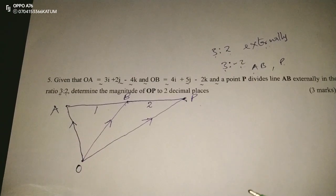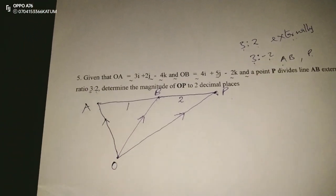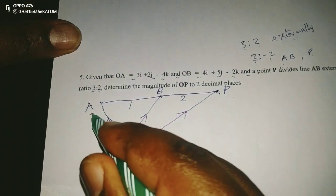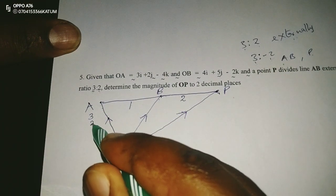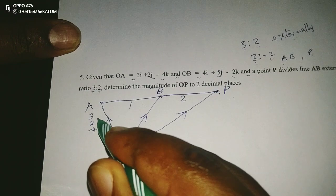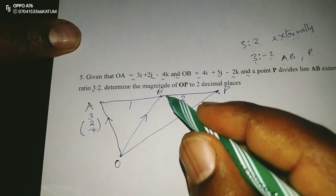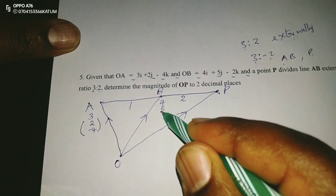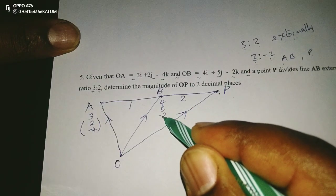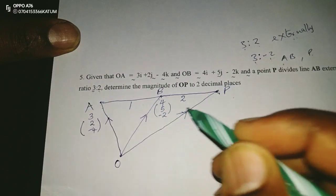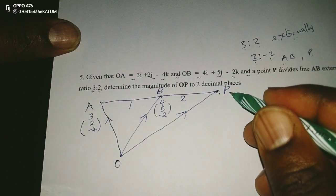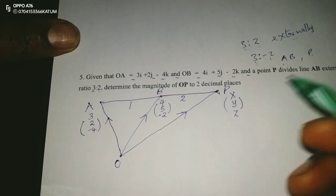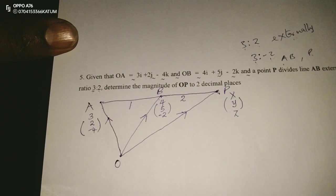So now we can give the position vectors. For A, it's (3, 2, -4). For B, it's (4, 5, -2). And for P, which is unknown, we can let it be X, Y, and Z. So those are the position vectors.